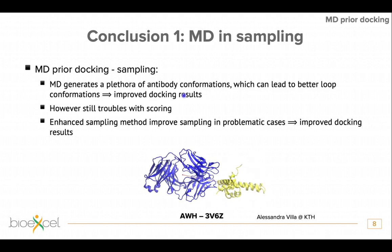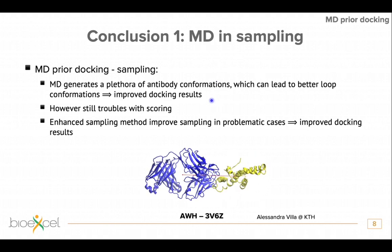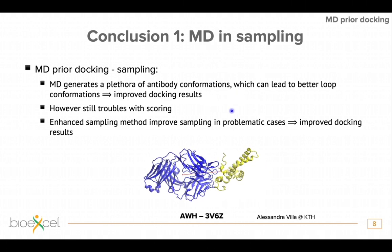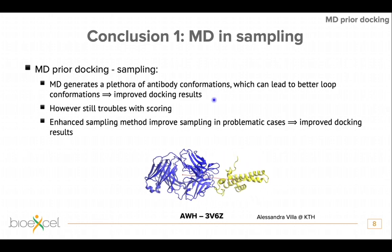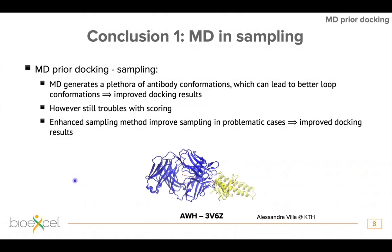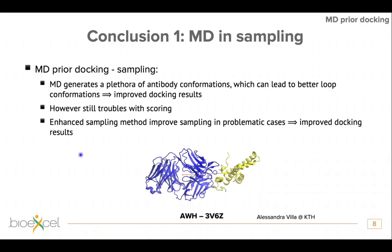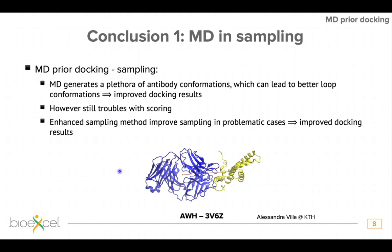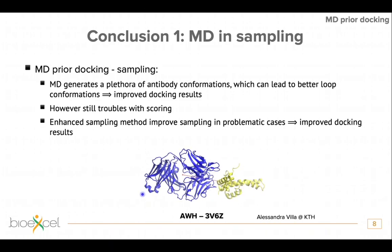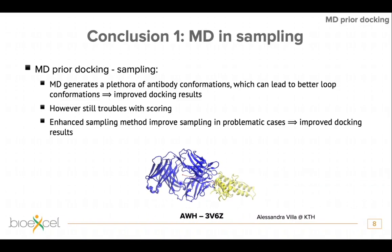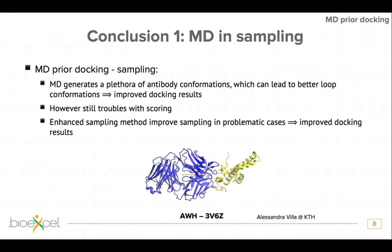To conclude the first part: MD before docking does improve the sampling — we have more good models, however we also get a higher number of worse models and still have some trouble with scoring them. If we use enhanced sampling methods we get better results even for very problematic cases. You can see a short movie made by Alessandra Villa and Kate from KTH showing the accelerated weight histogram simulations, where the antigen is being pulled away by the reaction coordinate in red.